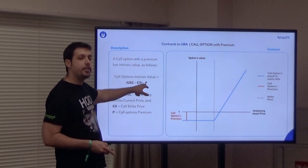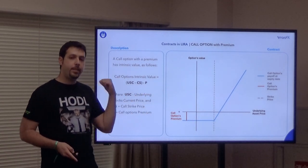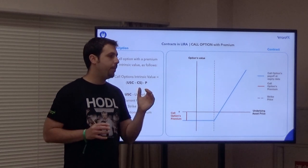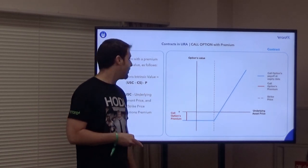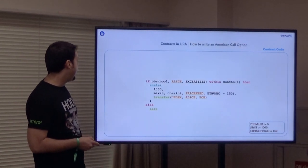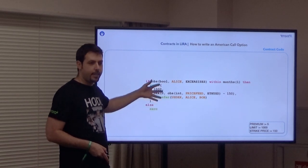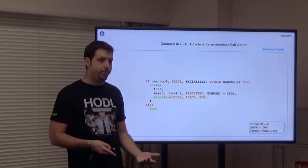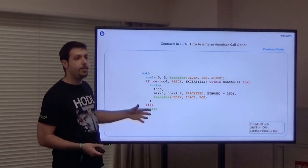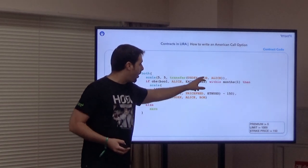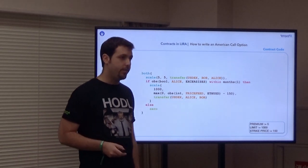In the simulation we showed before, we introduced a 4% premium and the price started down 4%. The code looks the same as our American option before, but now we just use 'both' and add another payment. In this case, if the premium is $5, we just add a transfer — paid immediately to Alice — in order to receive the rights for possible future payments. It's very compositional.